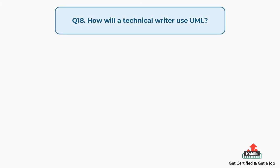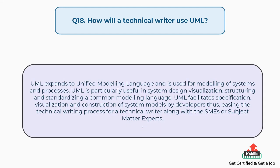Question number eighteen: how will a technical writer use UML? UML expands to Unified Modeling Language and is used for modeling systems and processes. UML is particularly useful in system design visualization, structuring, and standardizing a common modeling language. UML facilitates specification, visualization, and construction of system models by developers, easing the technical writing process for a technical writer along with subject matter experts.